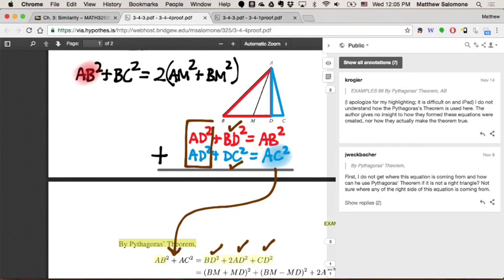which he does by observing that BD is a straight angle, and M is intermediate to it. So BD is equal to BM plus MD. And then likewise, AD squared...